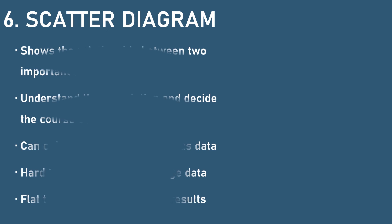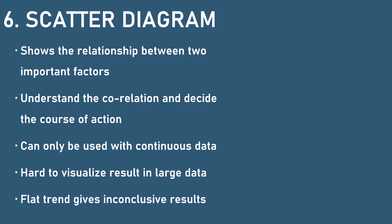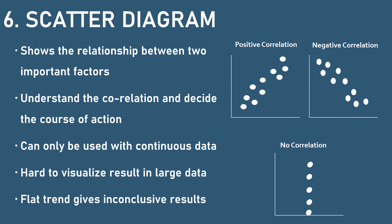The next tool is scatter diagram. It shows the relationship between two important factors, and we are able to understand the correlation and decide the course of action with this tool. Like the histogram, it can also be applied only with continuous data. However, in the case of large data, it is hard to visualize the result, and sometimes flat trends lead to inconclusive results. In the example shown, the X and Y axes represent two factors and results are plotted as dots. A forward-going slope indicates positive correlation, and a reverse slope indicates negative correlation. In the case of a straight line or curved lines, we are not able to conclude the relationship.